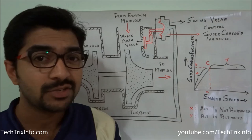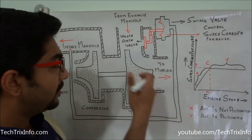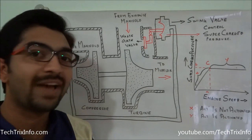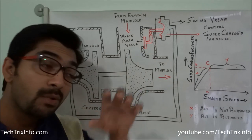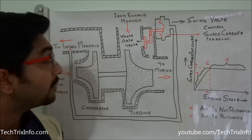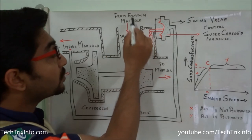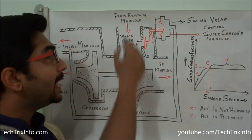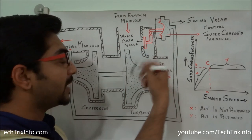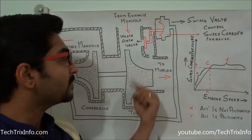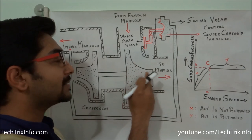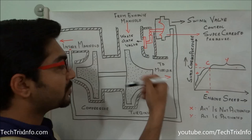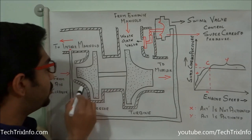A wastegate turbocharger consists of the turbine on this side — you can see this is the turbine — then we have a compressor, then the wastegate valve mechanism, and this entire unit is mounted on the top of the engine. The exhaust manifold is connected towards the turbine, so when the hot high pressure exhaust gas enters the turbine, it causes the turbine to rotate, giving power to the turbine. The exhaust gas then escapes to the muffler and goes out towards the atmosphere.